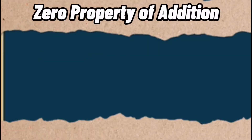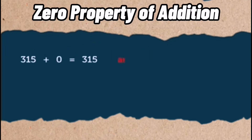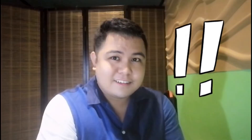Nothing is changed because this is the zero property of addition. Let us take the numbers 315 and zero. If we add 315 to zero, we get the sum 315. And even if we add 0 to 315, we get the sum 315. This tells us that when 0 is one of the two addends, then the sum is equal to the non-zero addend.